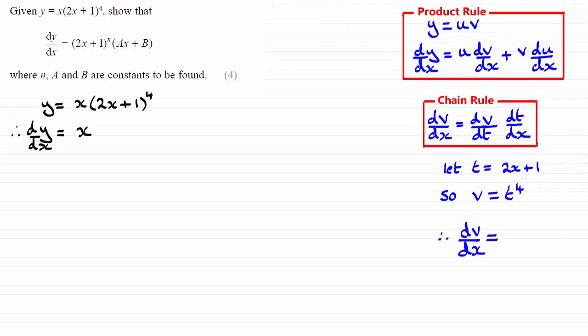So, when it comes to working out dv by dx, I need to work out dv by dt, first of all. So, if I differentiate t to the power 4 with respect to t, that's going to be 4 times t to the power 3. I'll put that in brackets for the moment, okay?